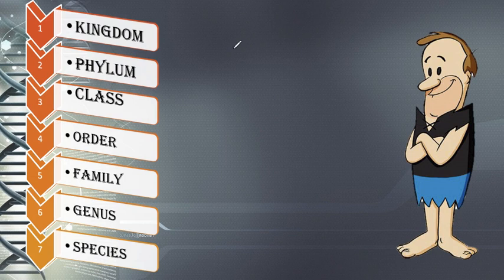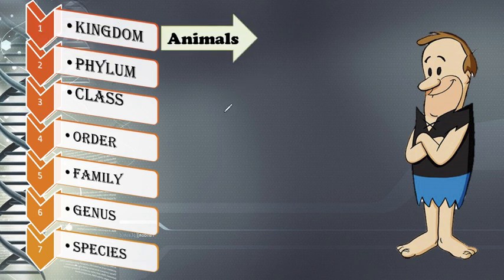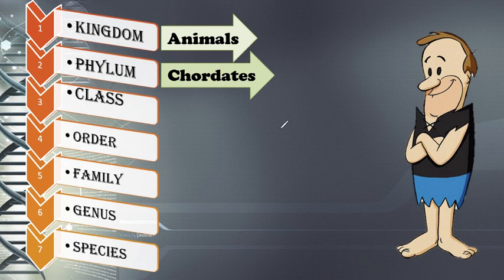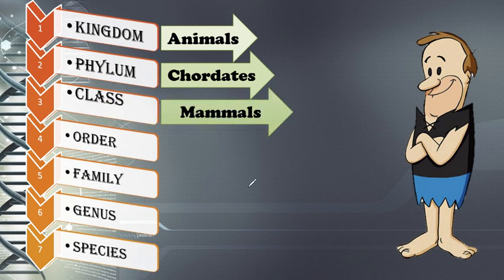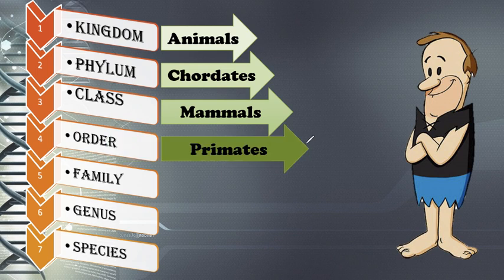The seven levels start with the biggest group: kingdom. Humans belong to the animal kingdom — not plants or bacteria. Our phylum is Chordata, which means animals with a backbone. Our class is Mammalia, because we are mammals, not reptiles, amphibians, or fish. Our order is Primates.